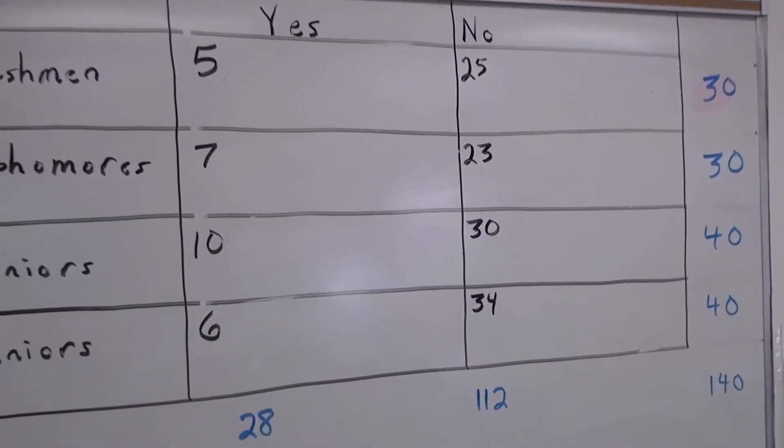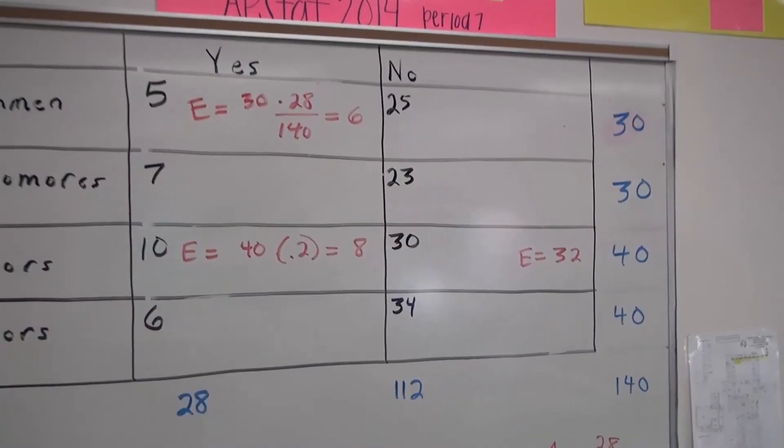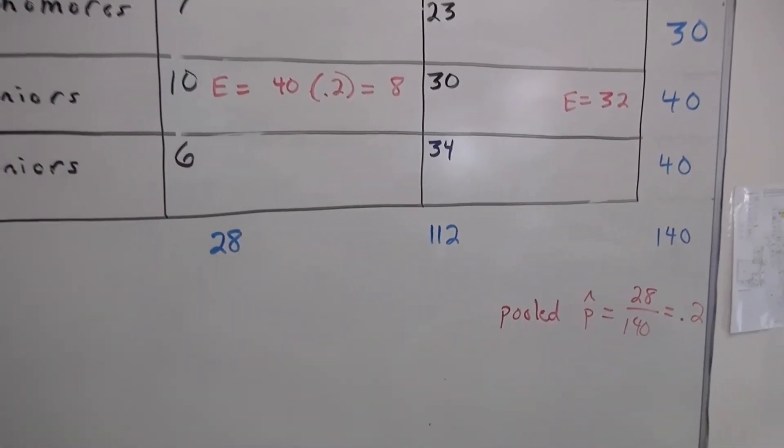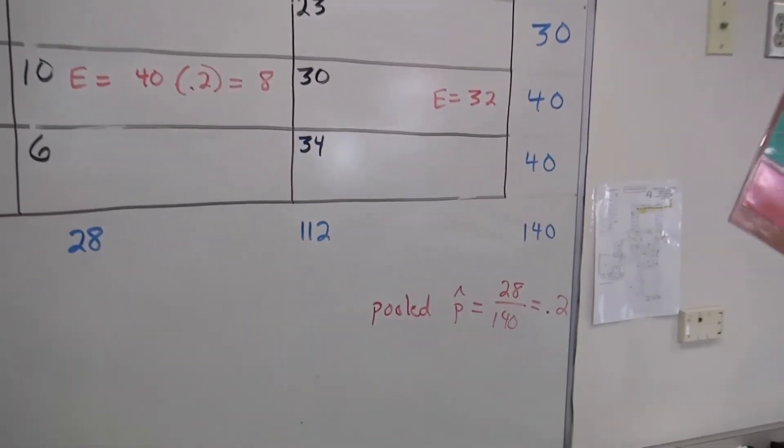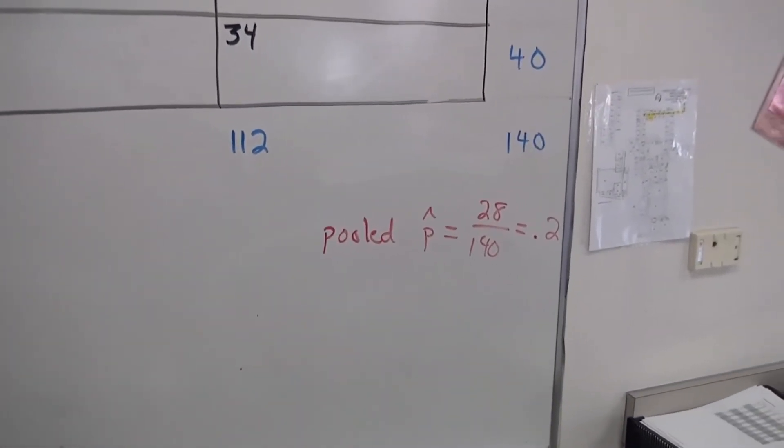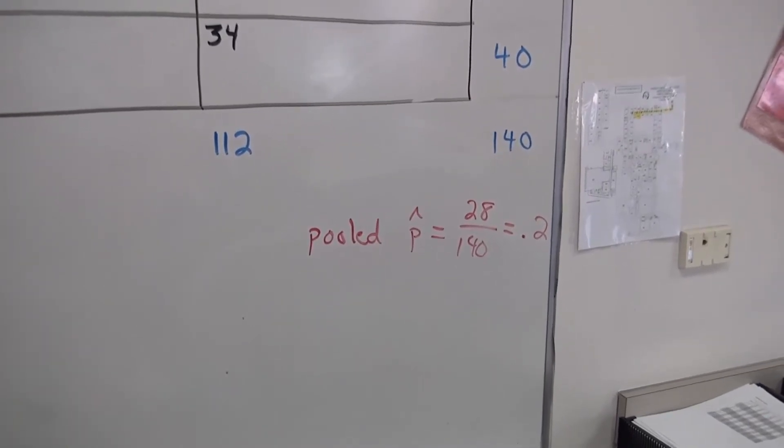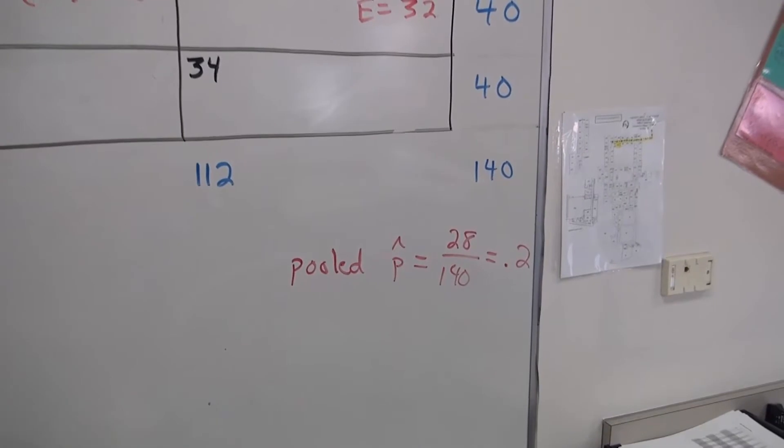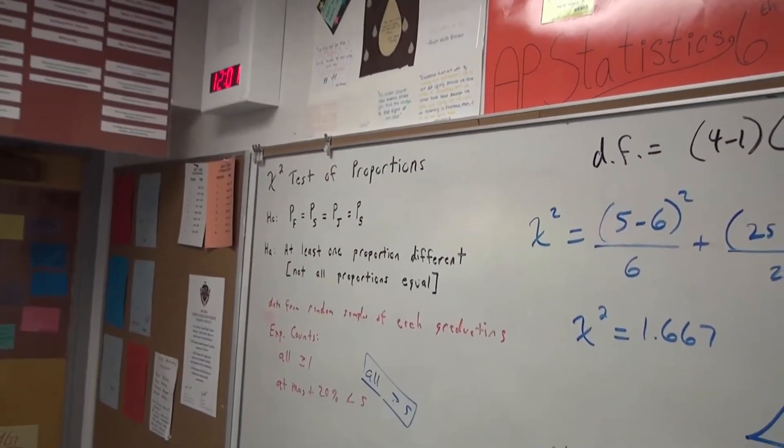If we look at the total number of yeses—the kids that actually have at least one F—that's 28 out of 140. So the pooled P-hat would be 28 out of 140, which is a 20% estimate of what the same proportion would be if we're believing the null is true and the proportions are equal.